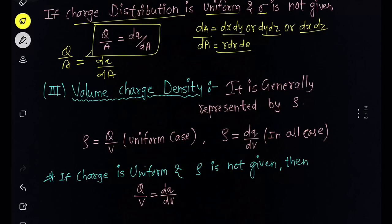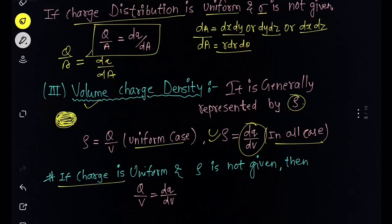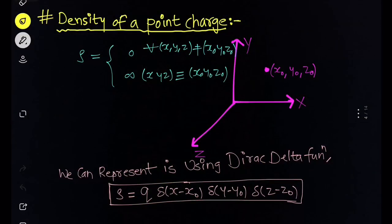The third type is volume charge density, represented by rho. It means charge distributed over a volume — for example, a solid sphere with charge distributed inside, outside, and on its surface. Volume charge density is given by charge divided by volume for the uniform case, and dq over dV in all cases. If charge distribution is uniform and rho is not given, we can use the ratio: charge spread over volume equals small charge in small volume.